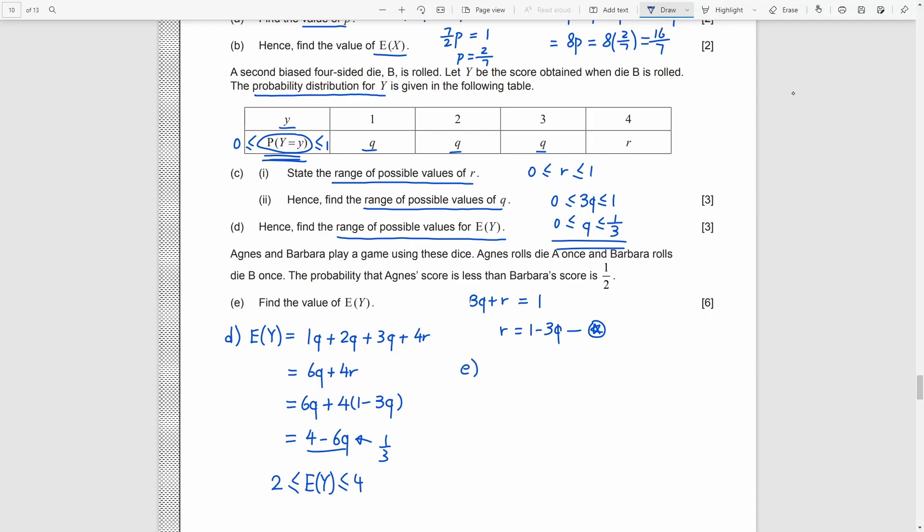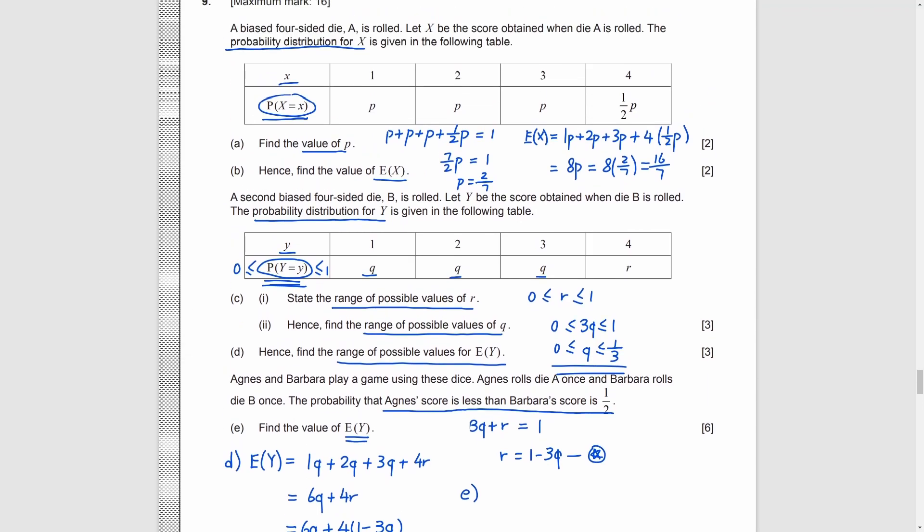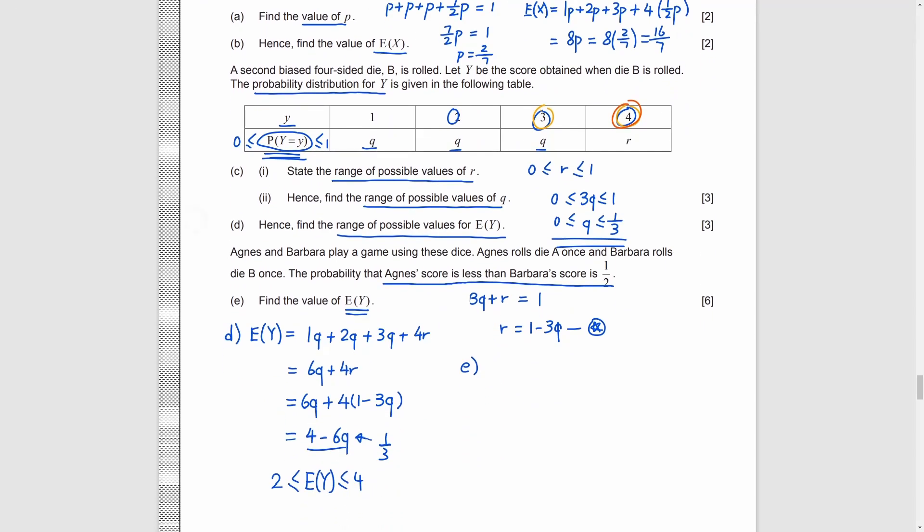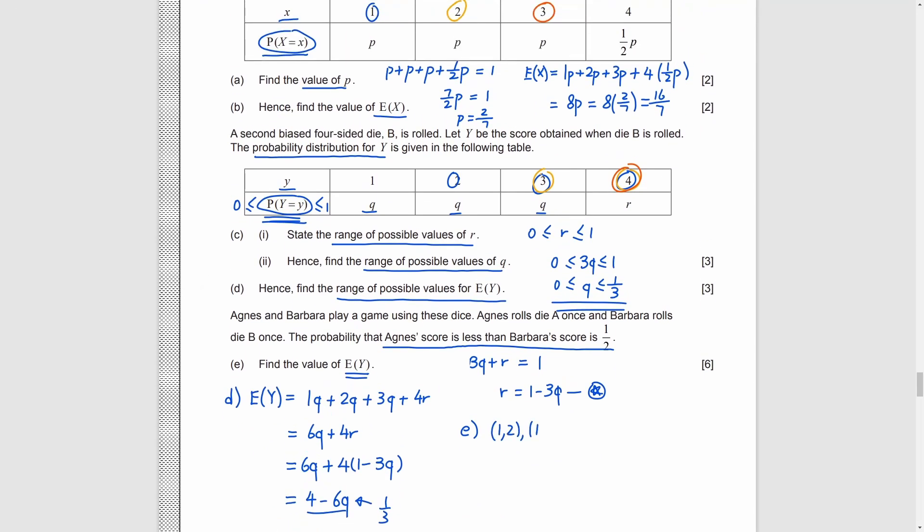For question E, we need to find the expected value of y. It is a very tricky question. The probability of a is less than b by half. So, we need to make an equation by this sentence. We look at the tables above. What are the situations that a score is less than b score? A guess 1 and b guess 2, 3, 4. Or, a guess 2 and b guess 3, 4. Or, a guess 3 and b guess 4. So, in total, there are 6 situations. We need to list these 6 cases and try to add the probability of them together.